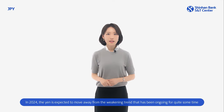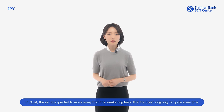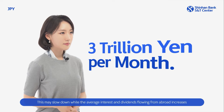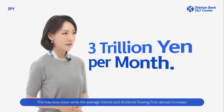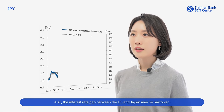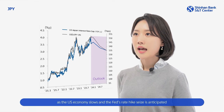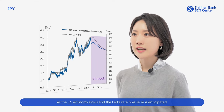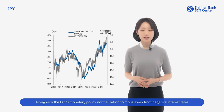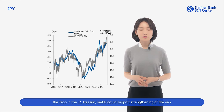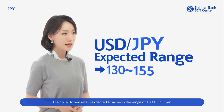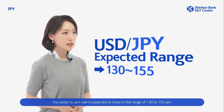In 2024, the yen is expected to move away from the weakening trend that has been ongoing for quite some time. Japanese capital invested heavily overseas in 2023 may slow down while the average interest and dividends flowing from abroad increases — the inflow sums up to 3 trillion yen per month. Also, the interest rate gap between the U.S. and Japan may be narrowed as the U.S. economy slows and the fast rate hike cycle is anticipated to cease. Along with the BOJ's monetary policy normalization to move away from negative interest rates, the drop in U.S. Treasury yields could support strengthening of the yen. However, the change in course may not be significant. The dollar-to-yen rate is expected to move in the range of 130 to 155 yen.